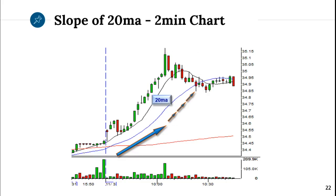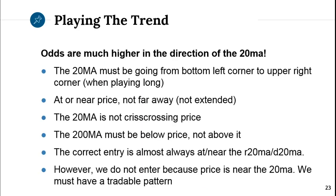You can play short when the stock goes climactic. The odds of a successful trade are significantly higher when playing in the direction of the 20MA. But not all 20MAs are created equal. You want your 20MA going from the bottom left corner of the chart to the upper right corner — that's 45 degrees when playing long, and vice versa when playing short.